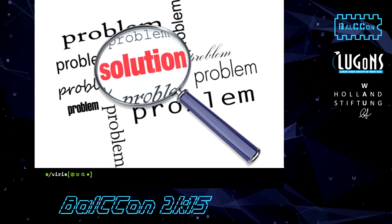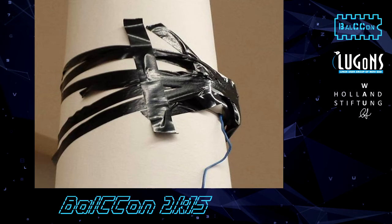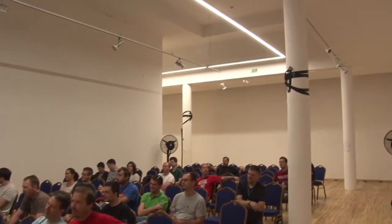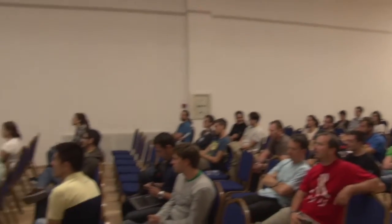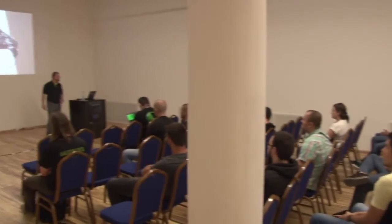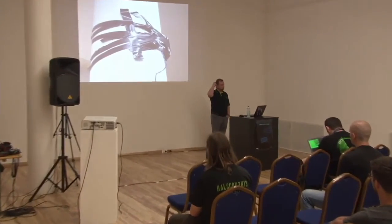What is the problem at the moment with Wi-Fi visualization? Does somebody recognize this? It's taped Wi-Fi access points — taped pretty well so it won't fall down. But do you know who's connected to that Wi-Fi hotspot? It was the BalkonCon Wi-Fi connector.